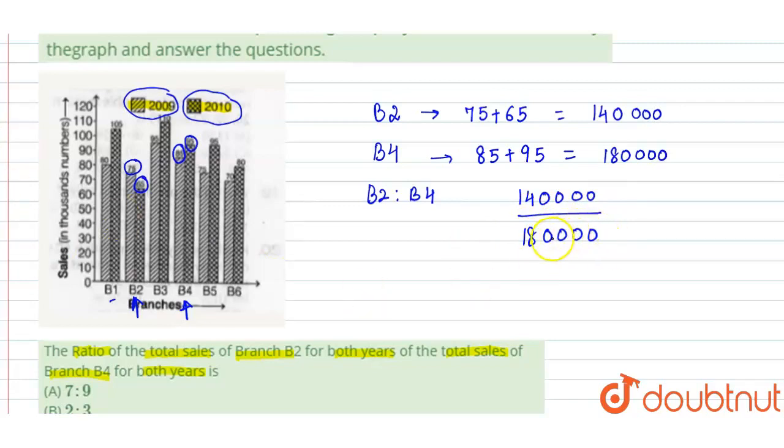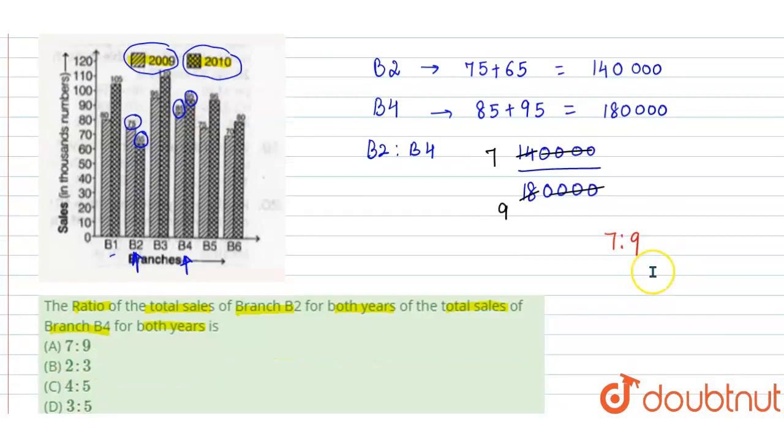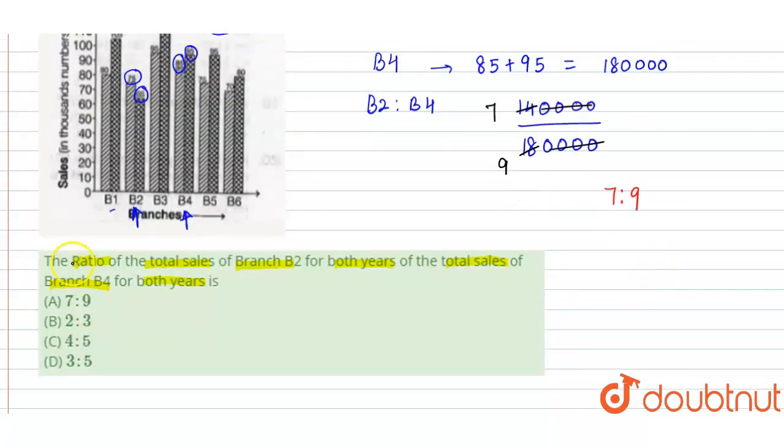Four zeros cancel and we get 7 to 9. These numbers won't cancel further, so the ratio is 7 to 9. That means option A is correct. I hope you understand.